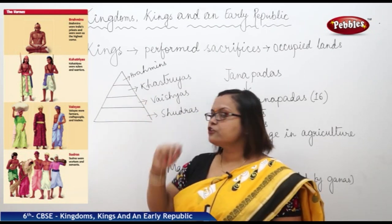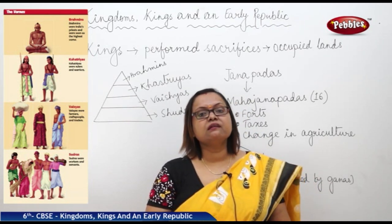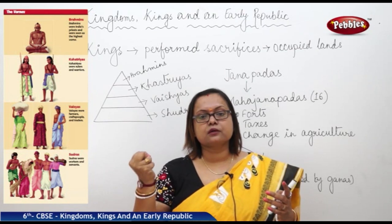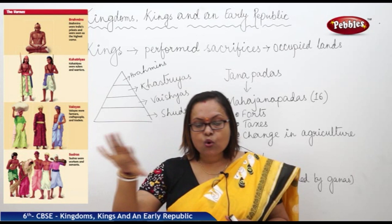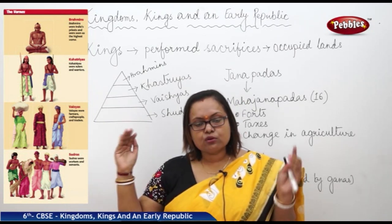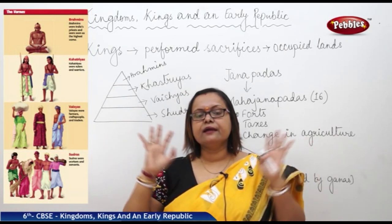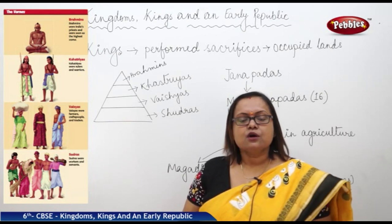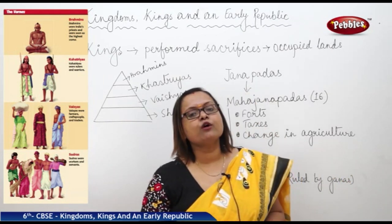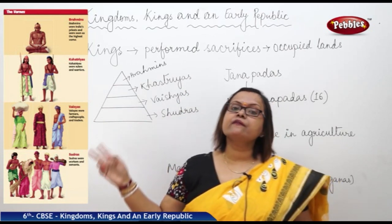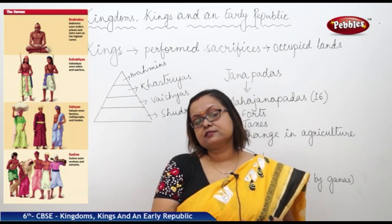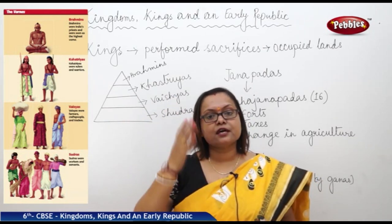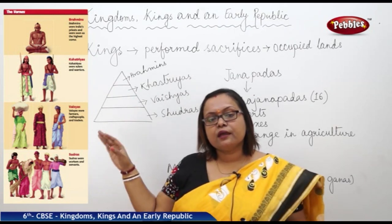Next we see the Kshatriyas who are the warriors — completely the king and his family, the kingly class, who had complete hold on the society and ruled the entire area. The king's son, daughter, and entire family were considered Kshatriyas. Next are the Vaishyas — people doing business. They could be traders going from one place to another, getting trading items from one place and selling elsewhere, bringing customs, ideas, and money from outside the kingdom.